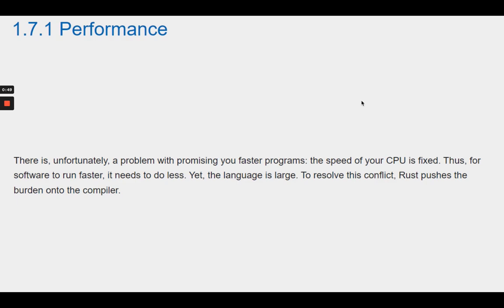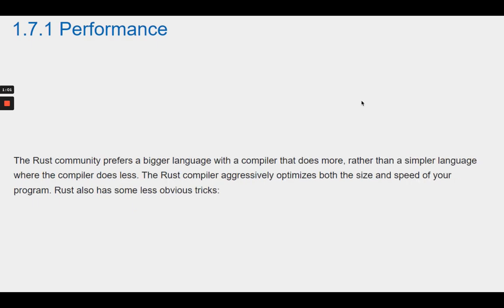Thus, for software to run faster, it needs to do less. Yet the language is large. To resolve this conflict, Rust pushes the burden onto the compiler. The Rust community prefers a bigger language with a compiler that does more, rather than a simpler language where the compiler does less. The Rust compiler aggressively optimizes both the size and speed of your program.